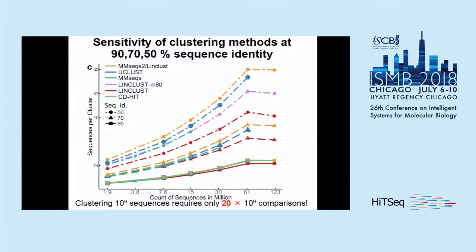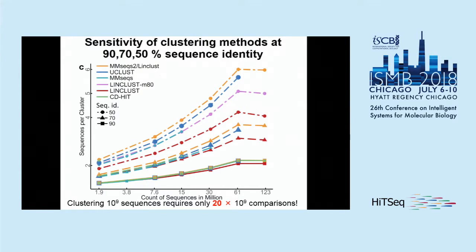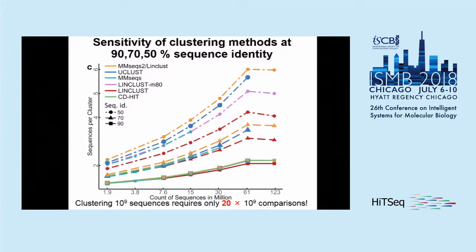We then define our clusters and check the sensitivity of our clustering method at 90%, 70%, and 50% sequence identity. LinClust performs similarly well to other clustering methods at 90% sequence identity. At 70%, there's already some gap between UCLUST and LinClust combined with MMSeq2. At 50%, LinClust is less sensitive than UCLUST or MMSeq2. However, instead of extracting just 20 k-mers per sequence, you can extract 80 k-mers, which gives a speed penalty of only 1.8x but increases sensitivity considerably — while still being thousands of times faster.